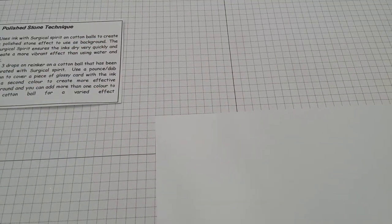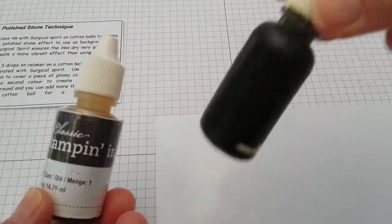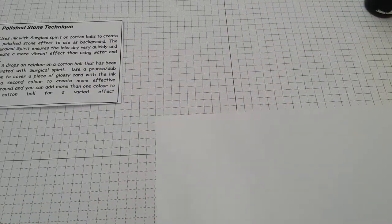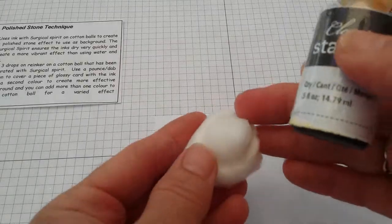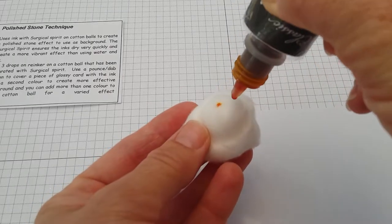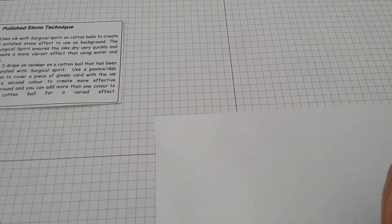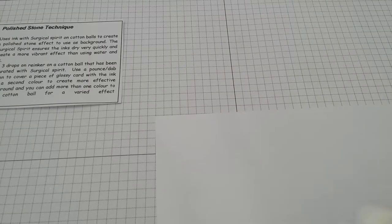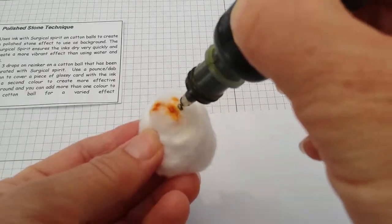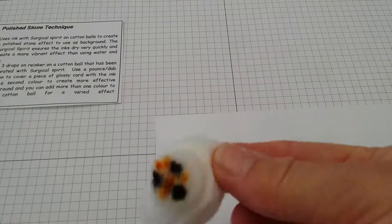Then I'm going to use our Stampin' Up Reinkers. I've got Daffodil Delight and my Mossy Meadow which has completely lost the label. All you do is with the reinker just put three little drops on there of the Daffodil Delight and then with the Mossy Meadow just do exactly the same thing. I'm just going to put three little drops on there.